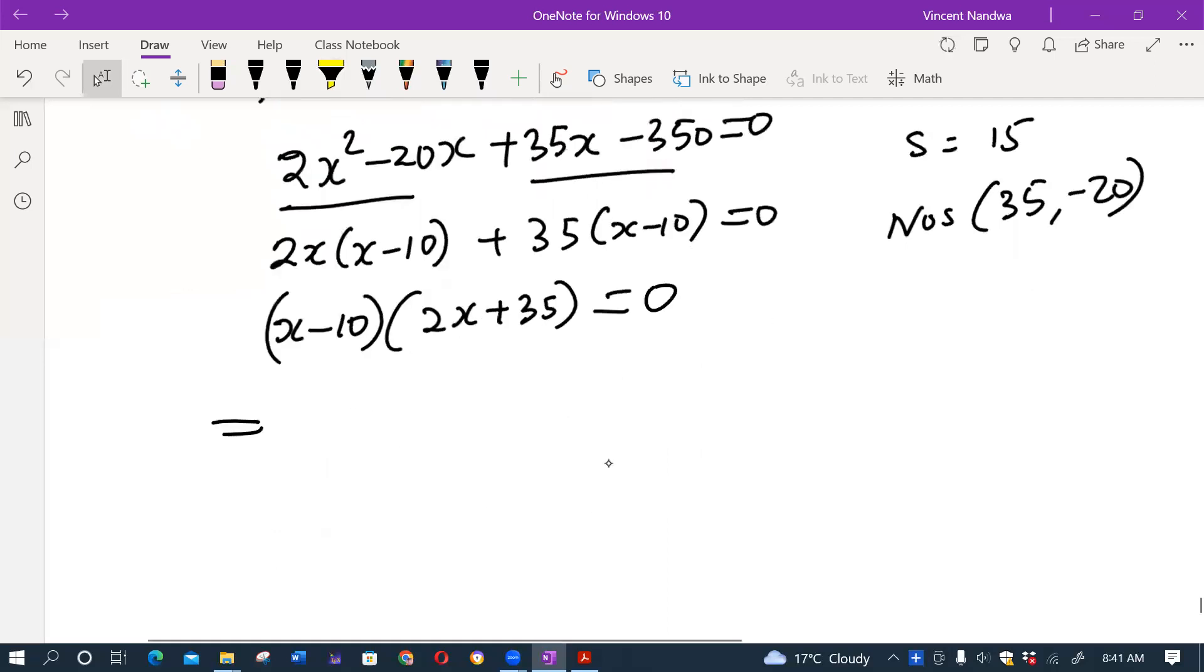So we'll have (x - 10) times (2x + 35) equals zero, which implies x minus 10 equals zero or 2x plus 35 equals zero.